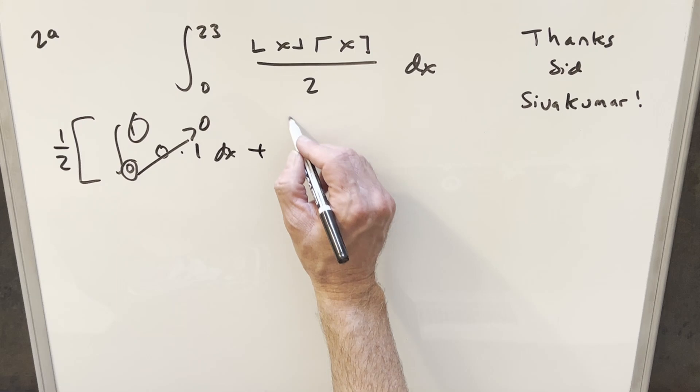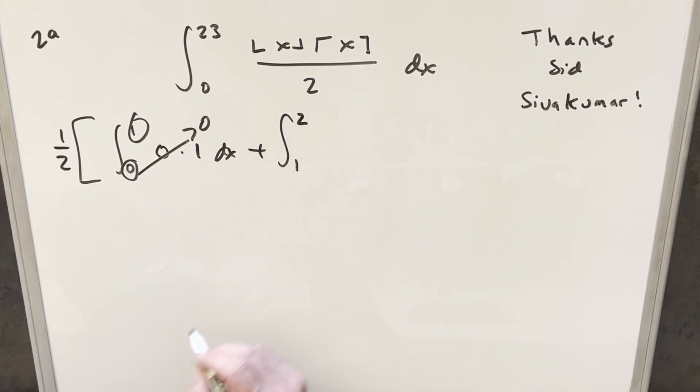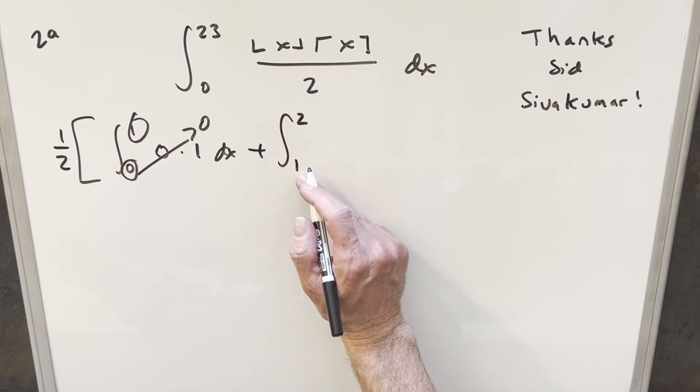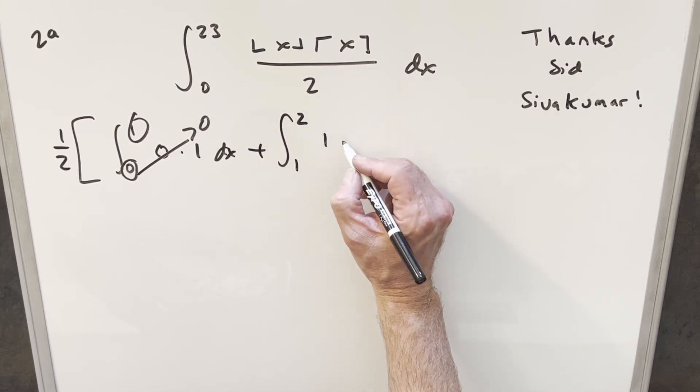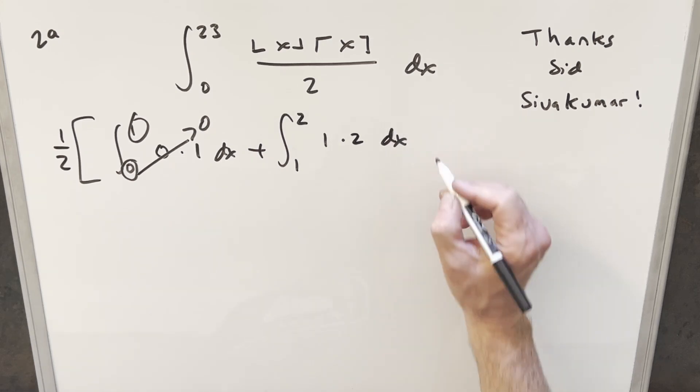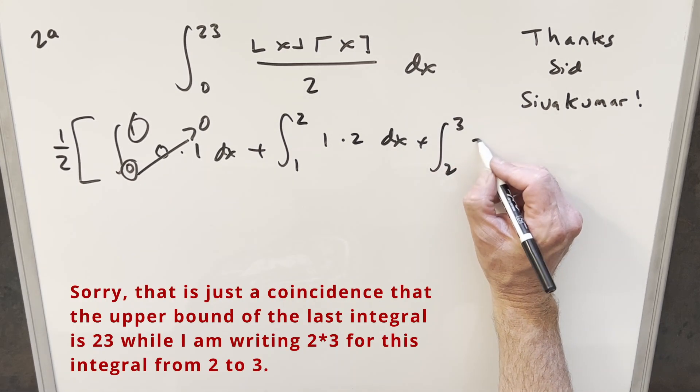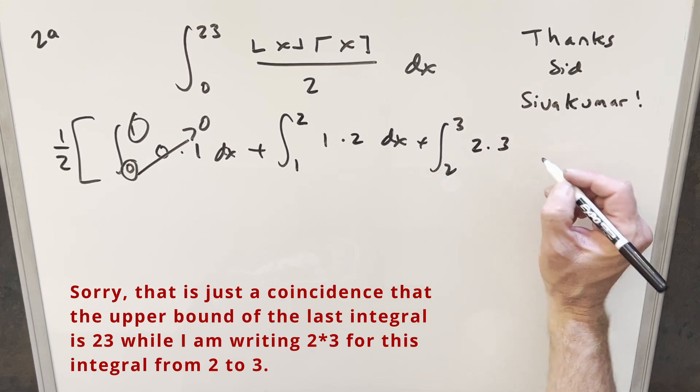But then we're just going to keep doing the same kind of thing. Like for the second one, we're going to start at 1 and go to the upper bound 2. The floor again rounds us down to this lower bound 1. Then the ceiling is going to take us up to the upper bound 2. And so we're just going to go on and on like this all the way, not to infinity, but to 23 for the upper bound here.